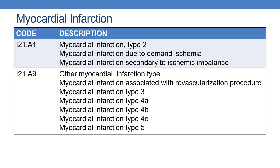The next code is I21.A1 — myocardial infarction Type 2, or myocardial infarction due to demand ischemia, or myocardial infarction secondary to ischemic imbalance. Whenever the physician documents myocardial infarction due to demand ischemia or Type 2 myocardial infarction, code I21.A1.